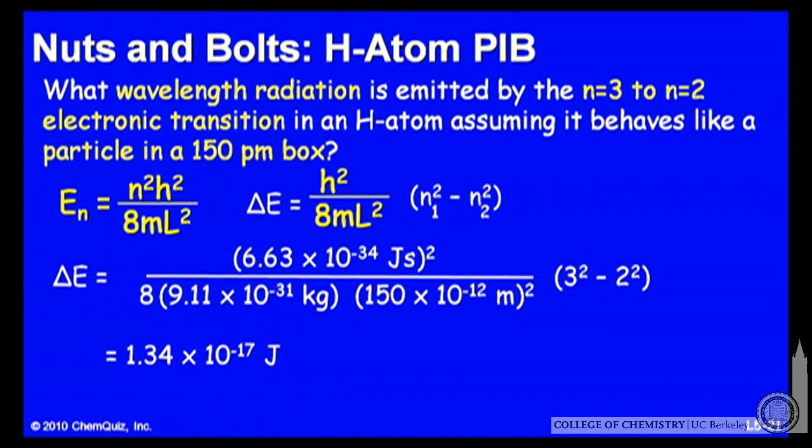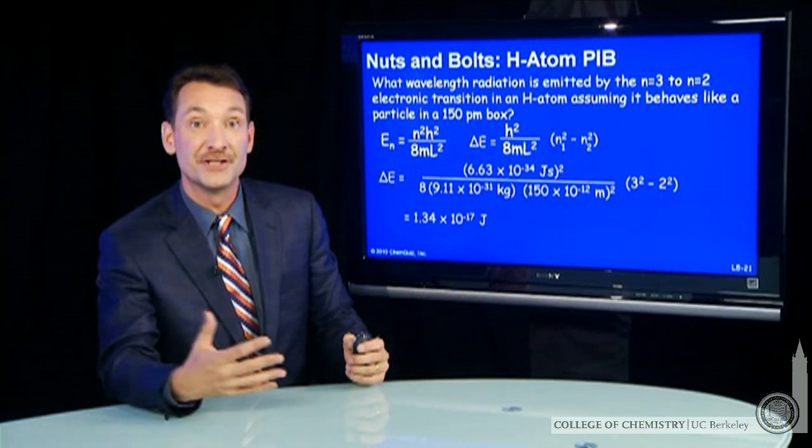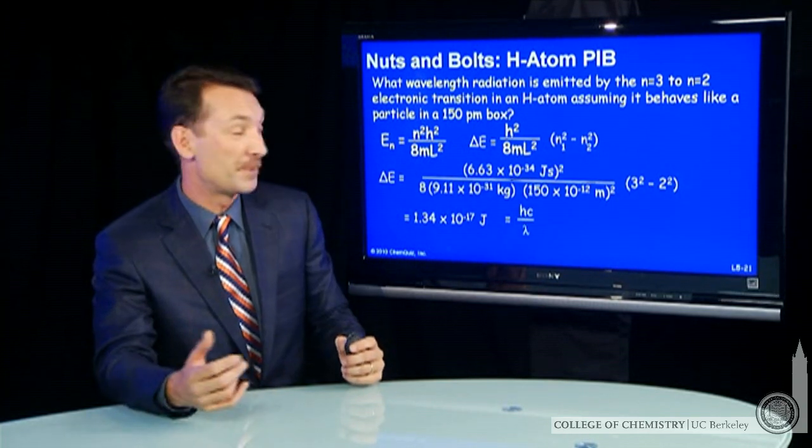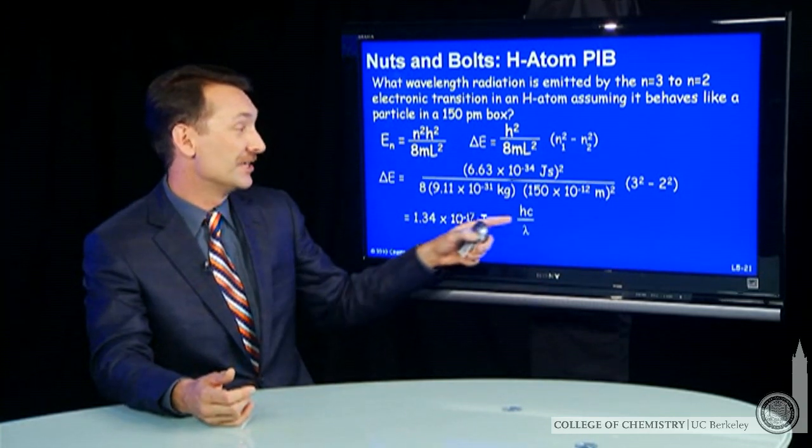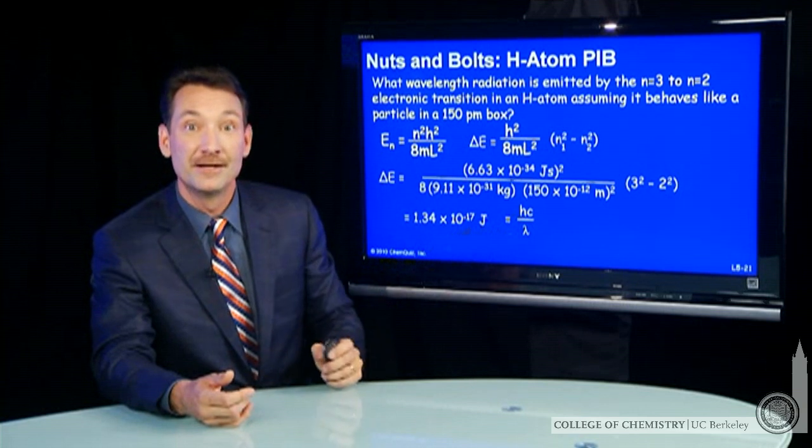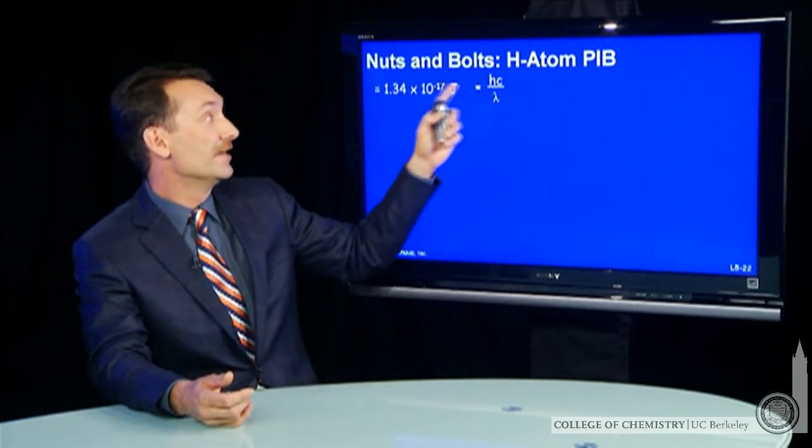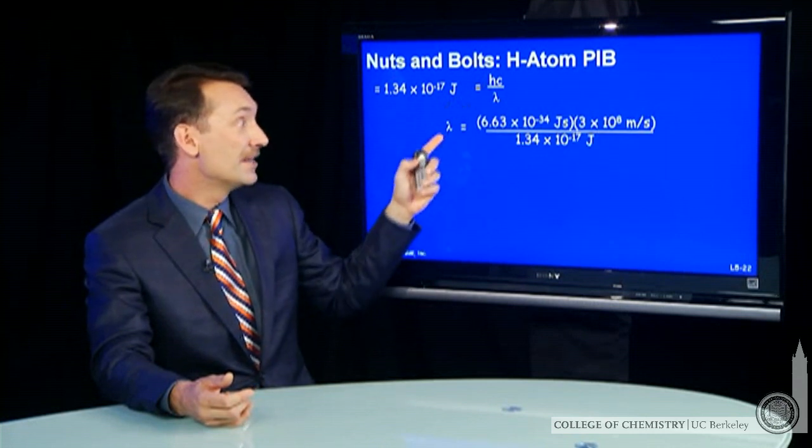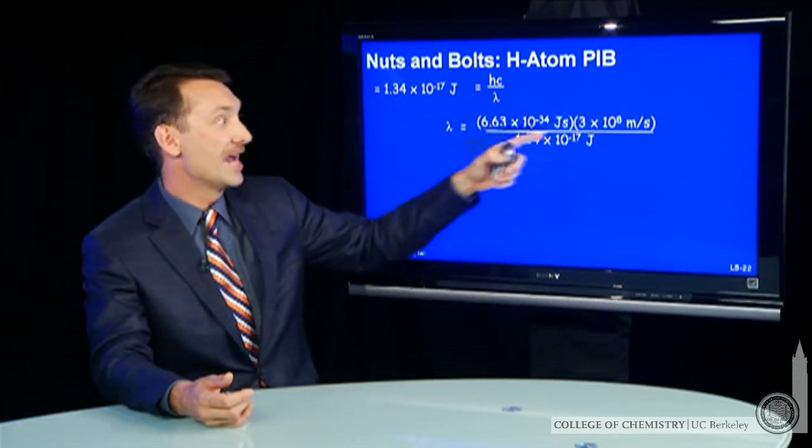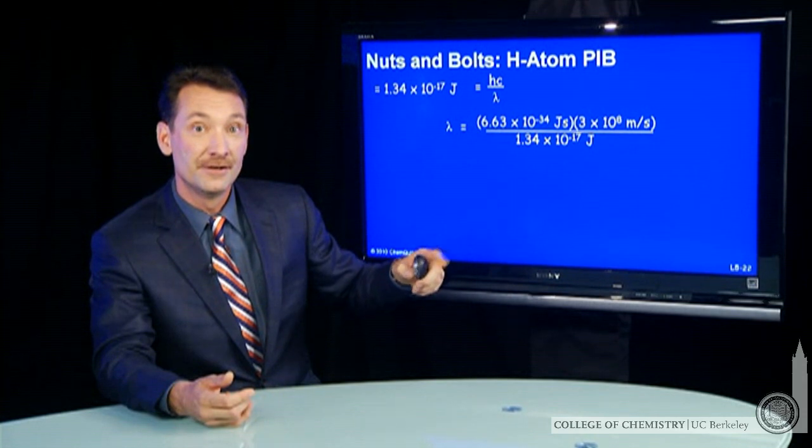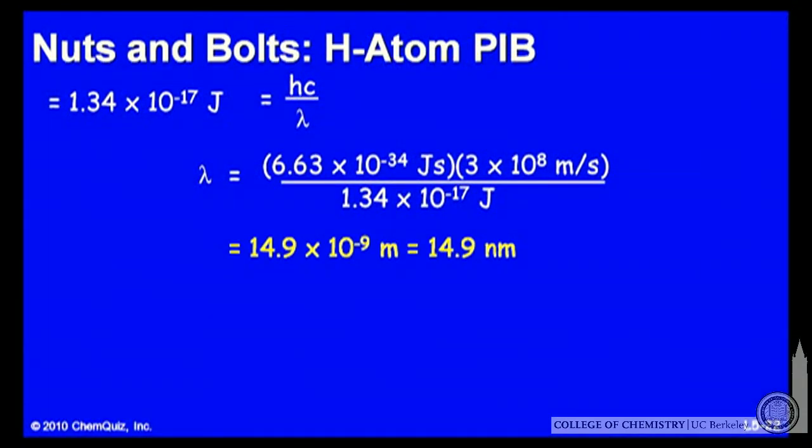I didn't ask for an energy. I asked for a wavelength. But we can go from energy to wavelength, just using the properties of the wave. The energy is hc/λ. Lambda, the wavelength, is what we want. And we can calculate that. So if this energy is hc/λ, then λ is hc over the energy. Putting those three numbers in gives me a wavelength of 14.9 nanometers, a tiny little wavelength, somewhere in the ultraviolet.